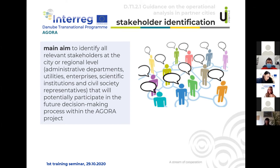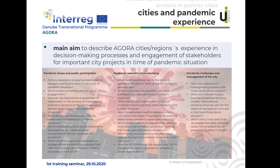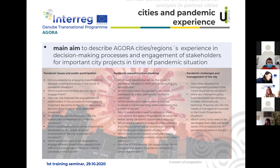Another part of the guidance is devoted to stakeholder identification, with the main aim of identifying all relevant stakeholders at the city or regional level — administrative departments, utilities, enterprises, scientific institutions, civil societies, and others — that will potentially participate in future decision-making processes within the Agora project. More details on stakeholder identification will be presented by Torsten from PAKORA after my presentation.